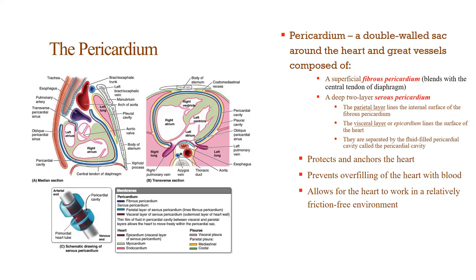The purpose of the pericardium is protecting and anchoring the heart, preventing overfilling, and decreasing friction. Questions about the pericardium tend to be about pericarditis — inflammation around the heart. Anatomically, the most high-yield thing would be differentiating the layers: parietal versus visceral versus superficial. I'd say maybe one question max on this.